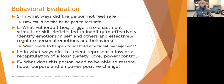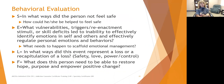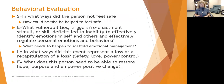F stands for Future: what does this person need to be able to restore hope, purpose, and empower positive change? There was a trauma situation — for some reason they started being reactive and protecting themselves from something that felt unsafe or triggered a remembrance of loss. How can we help them, from this situation right now, restore hope that they are safe, envision a positive future, and learn what triggered them so they can handle similar situations more healthfully in the future?